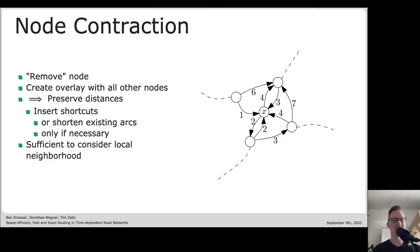Contraction hierarchies during preprocessing need to build up those overlay graphs. Since there's an overlay basically for each node, we can do that very easily by iteratively removing nodes and just preserving the distances among the rest of the nodes. Since only one node is removed, it is enough to consider the local neighborhood.